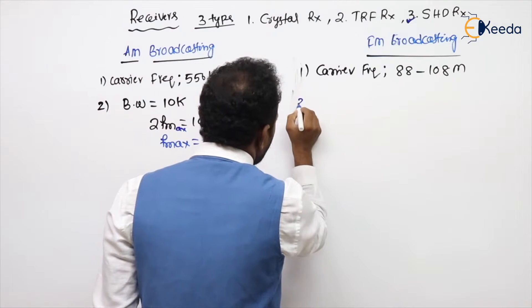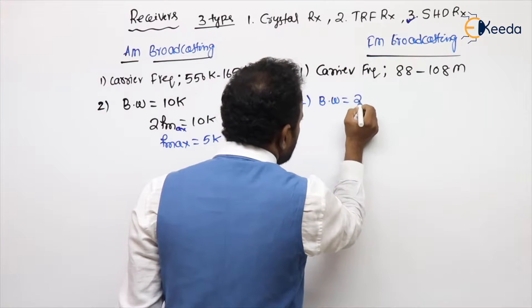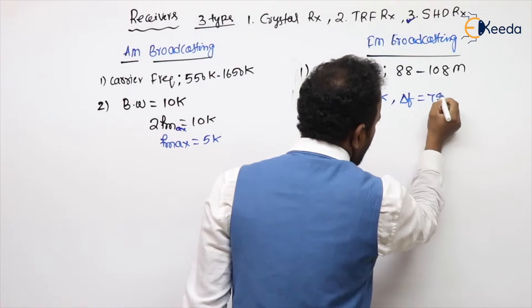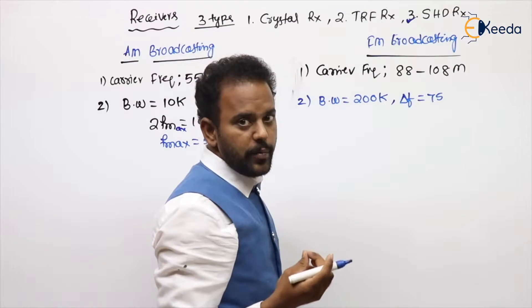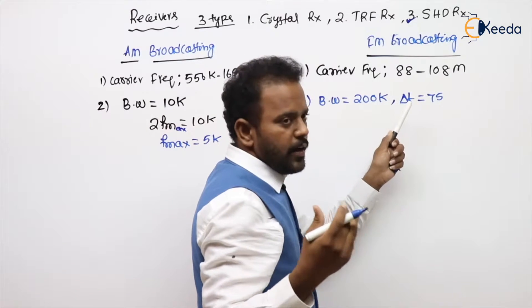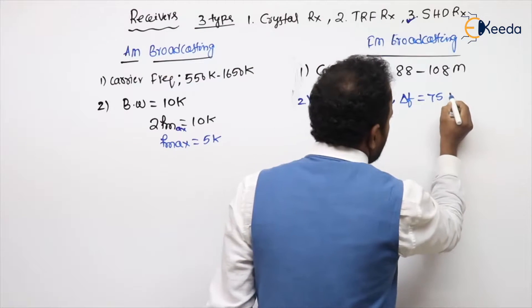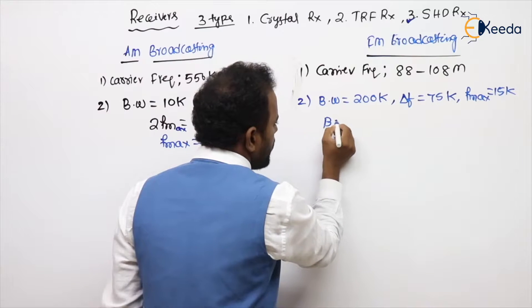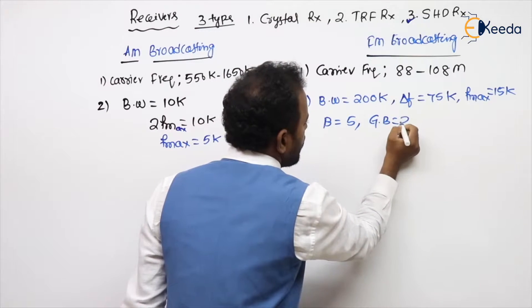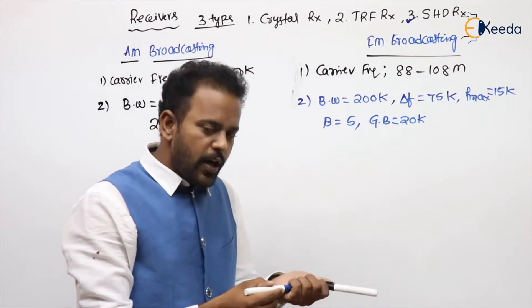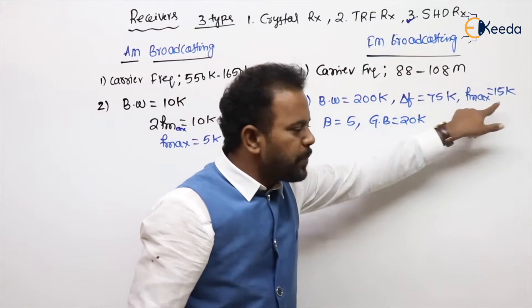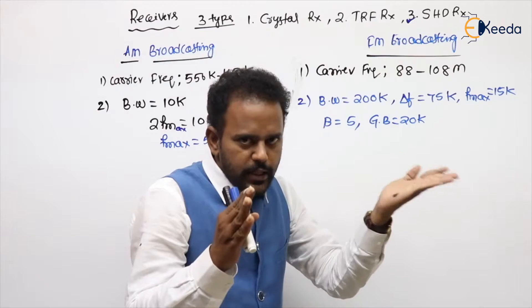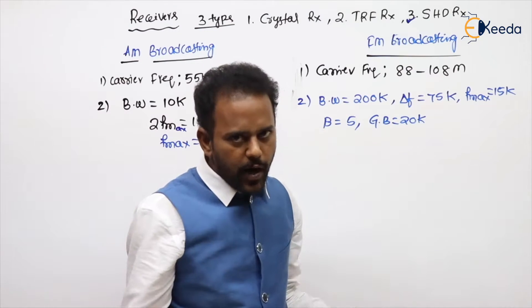For FM broadcasting, the bandwidth of each FM channel is 200 kHz. The maximum frequency deviation by FCC (Federal Communications Commission) standards is ΔF = 75 kHz, and the maximum message frequency is FM = 15 kHz. So the modulation index β = ΔF/FM = 75/15 = 5. Using the bandwidth formula 2·(ΔF + FM) = 2·(75 + 15) = 180 kHz, the remaining 20 kHz in the 200 kHz channel is the guard band.